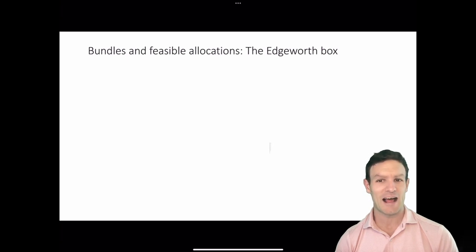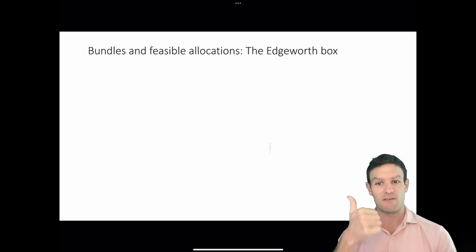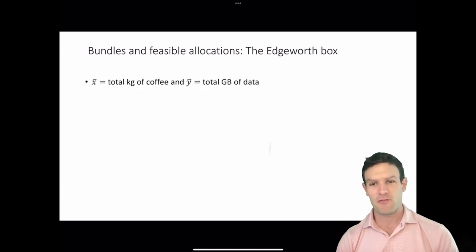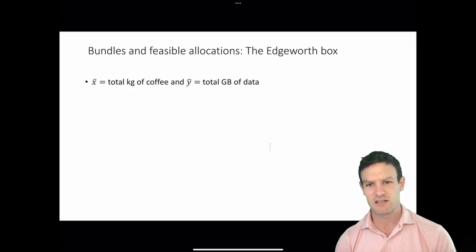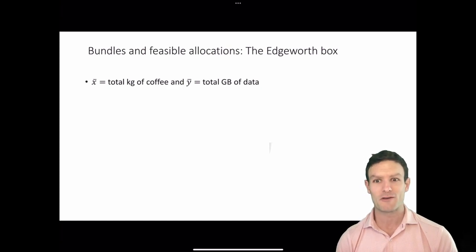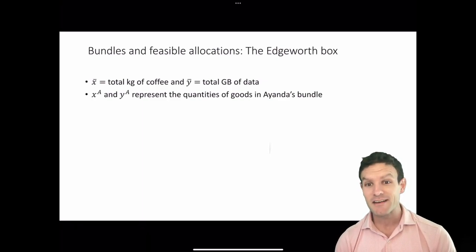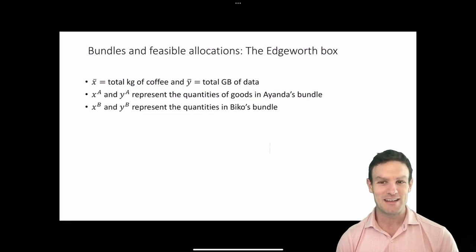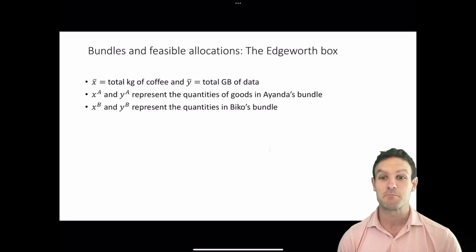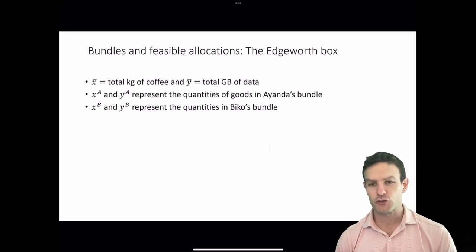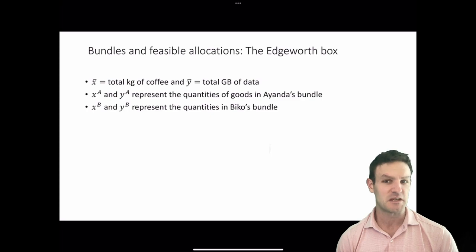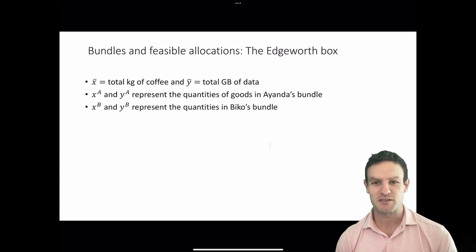To get started we need to think about feasible allocations and bundles in the Edgeworth box. In our story we have two people: Ianda and Biko. They like two goods — kilograms of coffee and gigabytes of data. x-bar and y-bar are the total amounts of those two goods respectively. x superscript a and y superscript a represent the quantities of goods in Ianda's bundle. Similarly, x superscript b and y superscript b represent the quantities in Biko's bundle — referred to as xa, ya, xb, and yb.